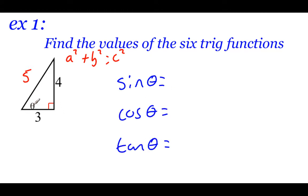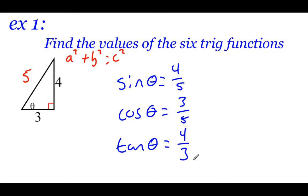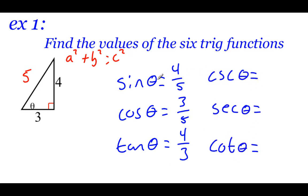Our angle theta is in the bottom left-hand corner of the triangle. For sine, opposite over hypotenuse: the opposite side is 4, hypotenuse is 5, so we get 4/5. For cosine, adjacent over hypotenuse: 3 is the adjacent side, 5 is the hypotenuse, so we get 3/5. For tangent, opposite over adjacent: that's 4/3. Now the reciprocal functions — cosecant is the reciprocal of sine, so we flip to get 5/4. Secant is the reciprocal of cosine, giving us 5/3. And cotangent is the reciprocal of tangent, so we get 3/4.